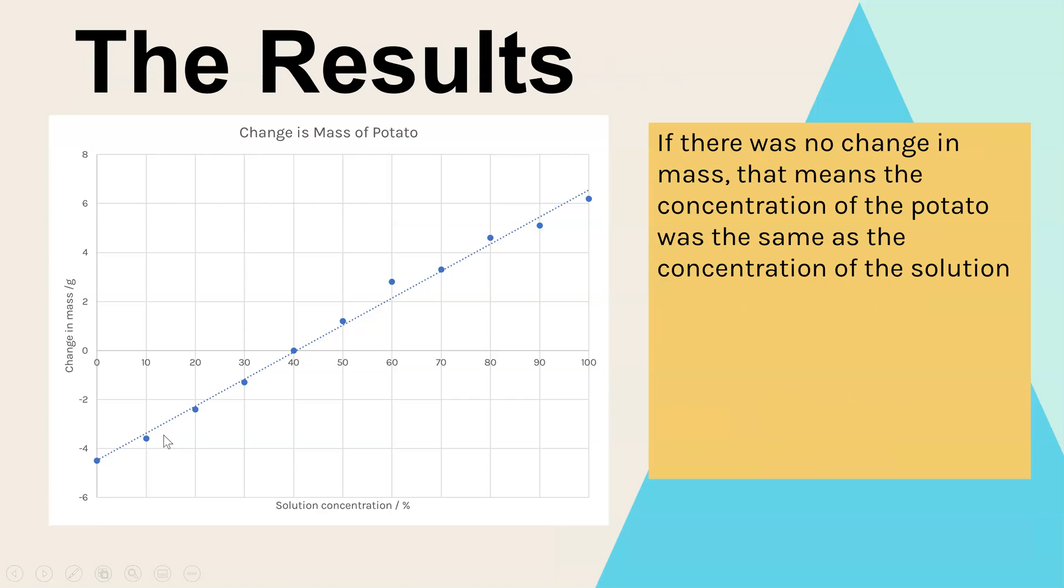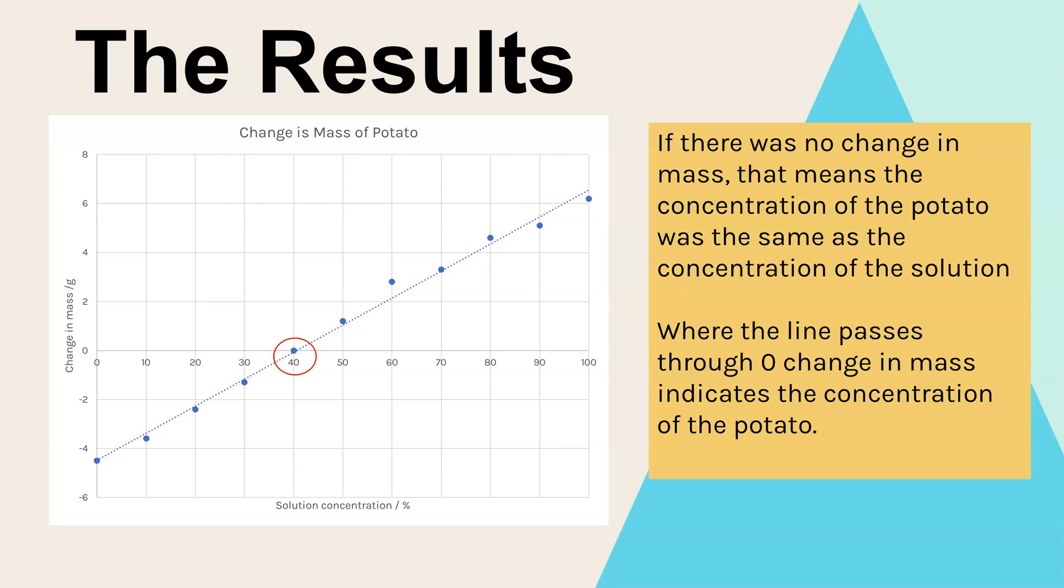And here I have some results. And what we can see here is the change in mass at the different concentrations. And this is more than the ones we saw on the diagram before. Now, if there's no change in mass, that means that there wasn't any overall diffusion of water. So osmosis wasn't happening. And if that's the case, we can find out on this graph what's the exact concentration of the potato must be.